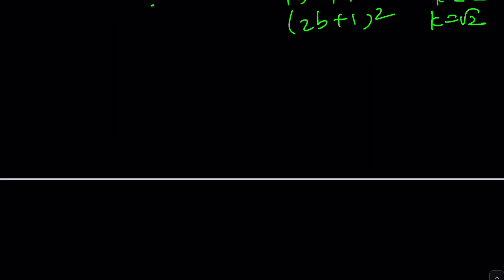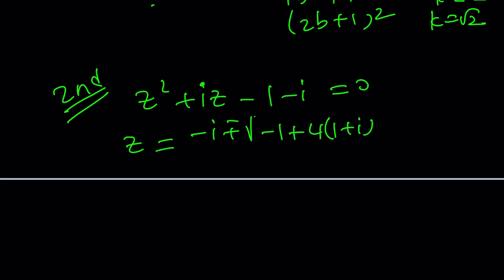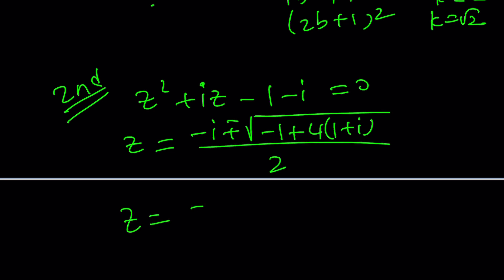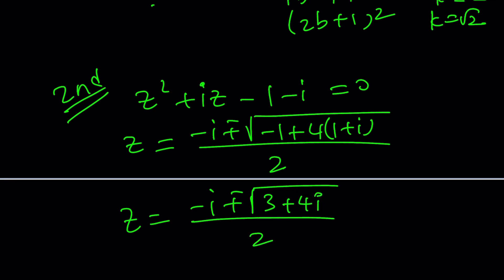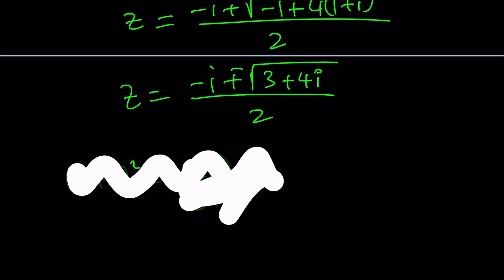The second method just uses the quadratic formula directly — put everything on the same side and apply it. Negative b plus or minus the square root of b squared minus 4ac, all divided by 2. Here b is i, so i squared is negative 1, and minus 4ac gives plus 4, plus 4i. So we get negative i plus or minus the square root of 3 plus 4i. Now notice that (2 plus i) squared equals 4 plus 4i plus i squared equals 3 plus 4i.